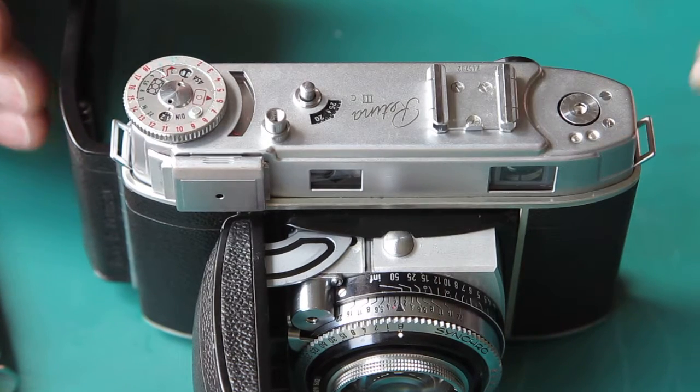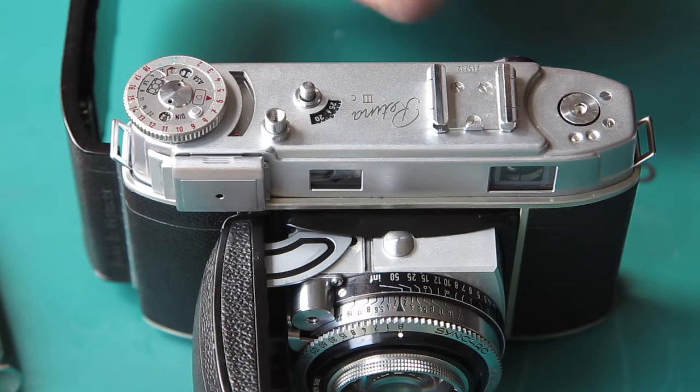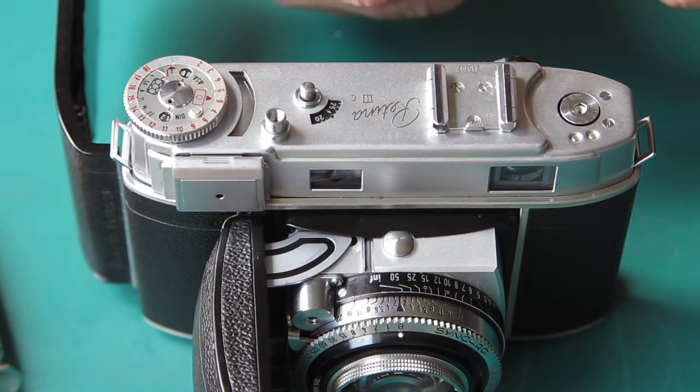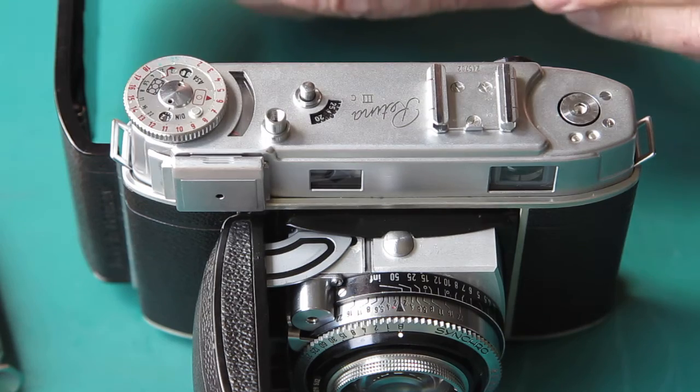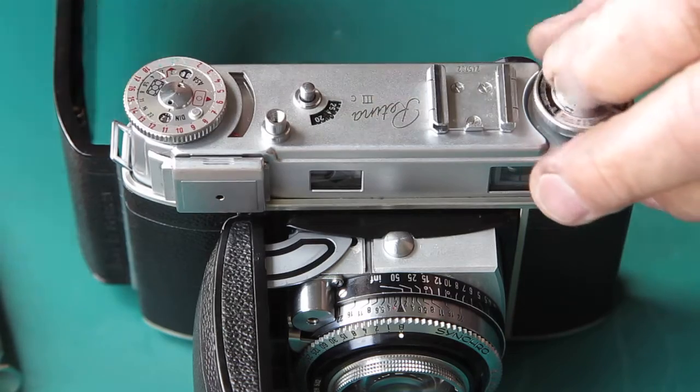Here's our top cover. Now our rewind knob. That had a spacer washer underneath it.